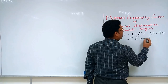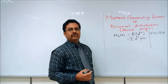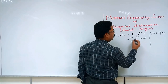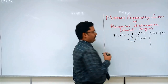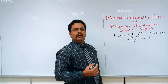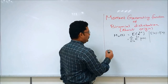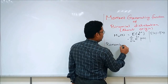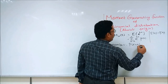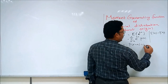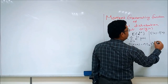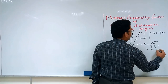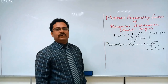The probability function of the binomial distribution has x varying from 0 to n. The rule for the binomial distribution is: P(x) = nCx times p^x times q^(n-x), where x varies from 0, 1, 2, and so on until the number of trials n.